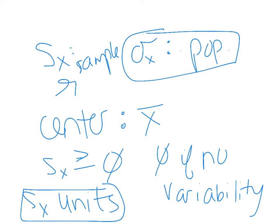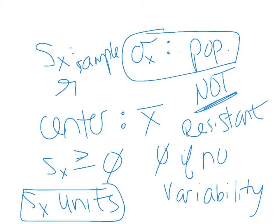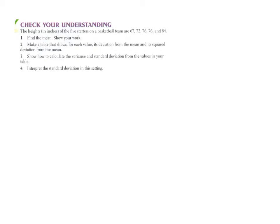Standard deviation is also not resistant, just like the mean. If there are large outliers, they will significantly change your standard deviation, making it much larger — because there's more variability, so the average distance from the mean gets bigger. Now let's look at an example: the heights in inches of five starters on a basketball team are 67, 72, 76, 76, and 84.